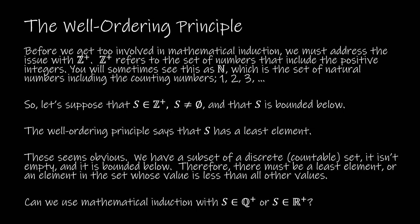Z plus starts at the number 1: 1, 2, 3, and so on. You might also see that referred to as the natural numbers. The whole numbers include 0, but we don't want to include 0, so the natural numbers are just the counting numbers: 1, 2, 3, 4, and so on. Our set S is an element of Z plus, meaning all elements are positive integers. S is not equal to the empty set, and S is bounded below. The well-ordering principle says that S has a least element, and that's what we need for mathematical induction to work.